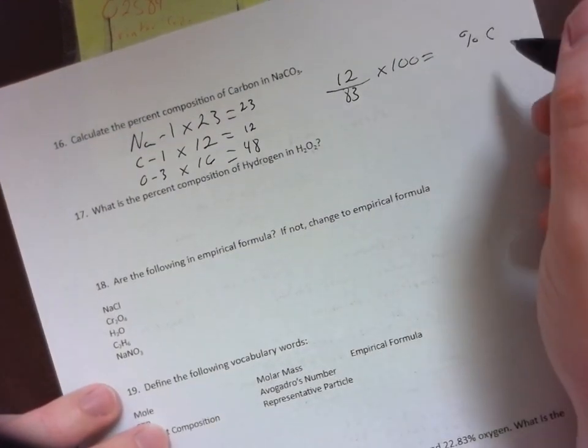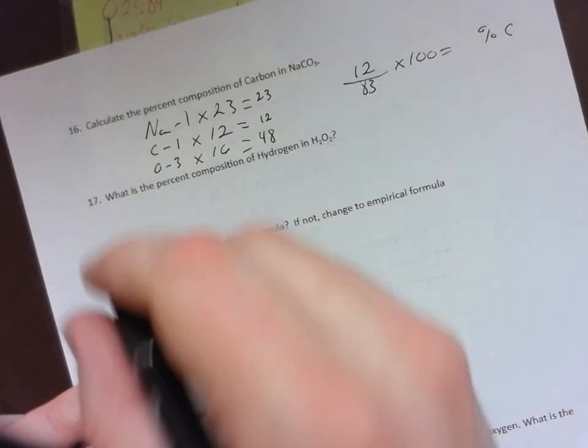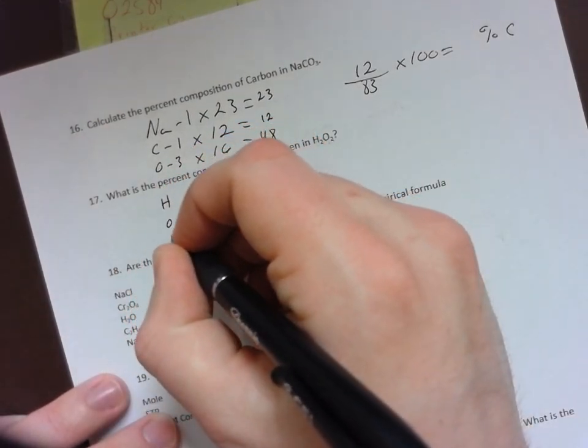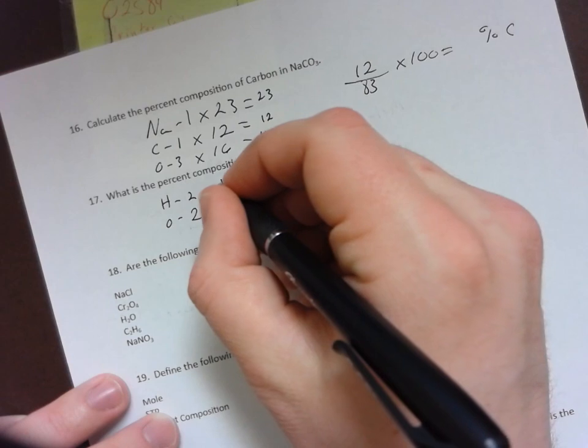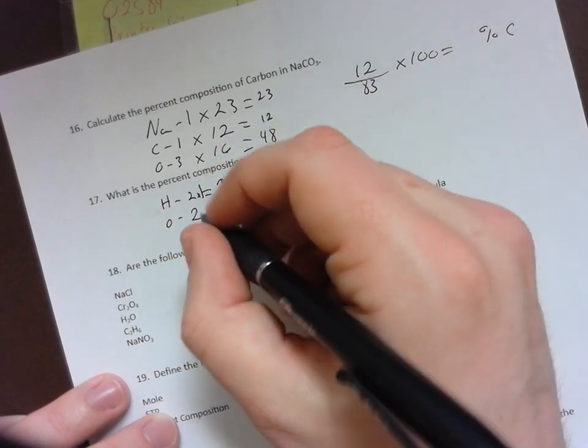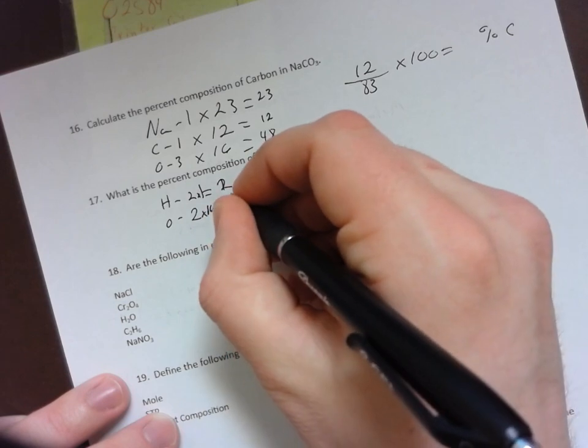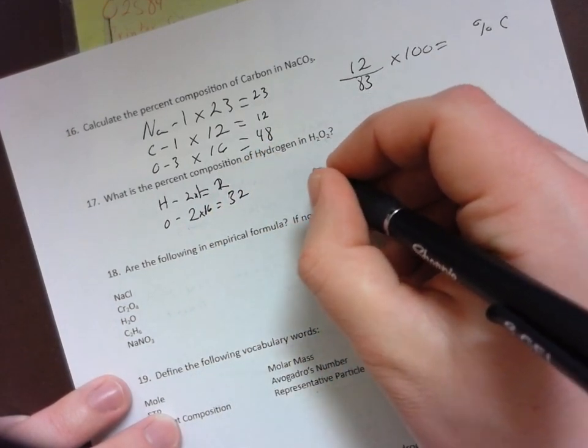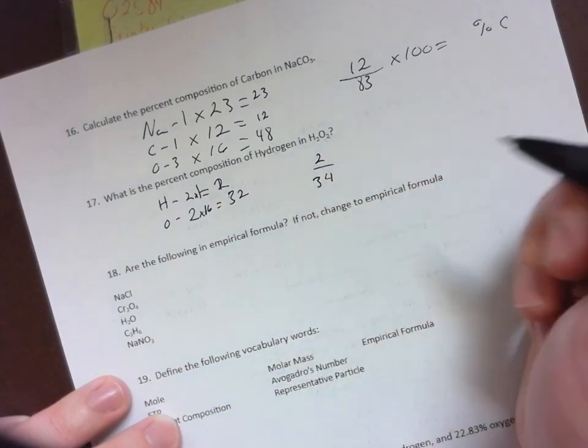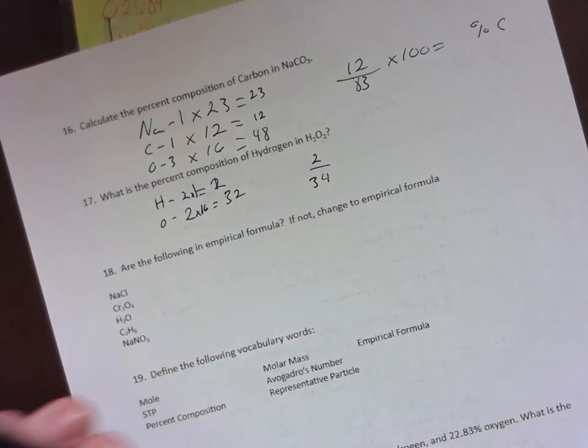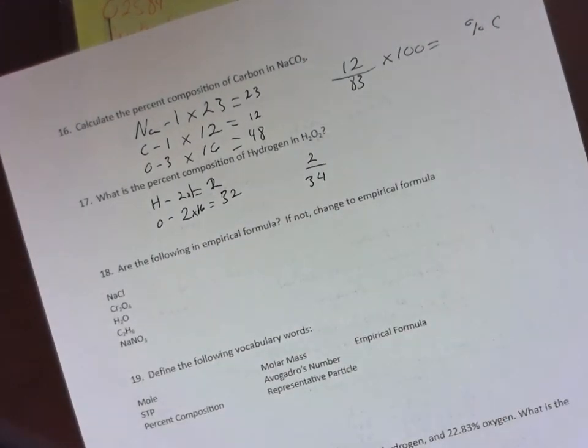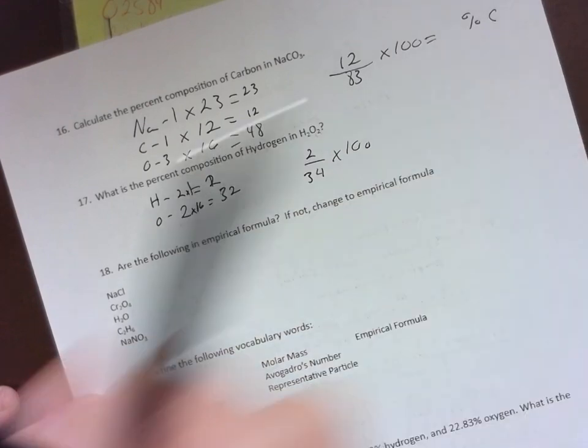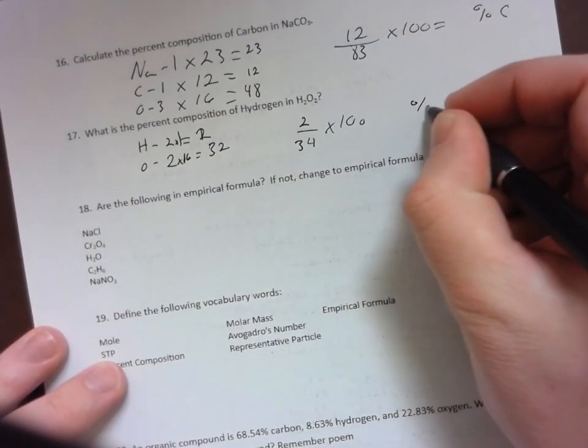What is the percent composition of hydrogen? I have two of each of these in my hydrogen peroxide, so 2 times 1 gives me 2, 2 times 16 gives me 32, so I need to divide by 34 and then I have 2. Now I need to multiply that by 100 and that would give you my answer. That's my percent composition of hydrogen.